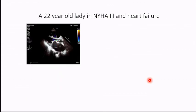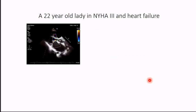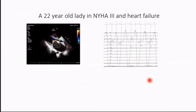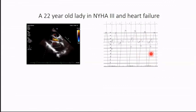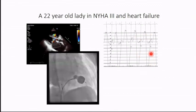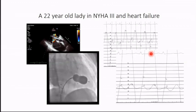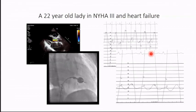Just to put it in perspective, I'll show you a case that we see often. This is a young lady who is severely symptomatic in heart failure, with classical mitral stenosis. When you catheterize them you get a gradient between the left atrium and the left ventricle in diastolic pressure, and you end up doing a balloon mitral valvotomy, which results in relief of that obstruction. This is a happy ending for one patient.